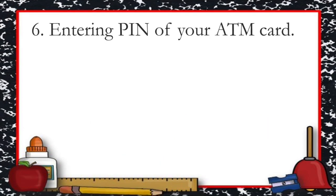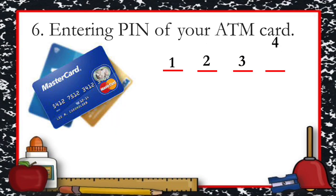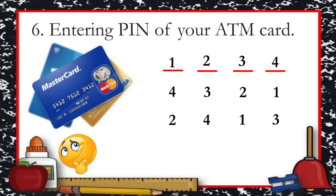How about entering the PIN of your ATM card? Let's say you have a four-digit PIN: 1, 2, 3, 4. If the digits interchange their positions — like 4, 3, 2, 1 or 2, 4, 1, 3 — those are different from the first code. Yes, of course they are different, so it illustrates permutation.